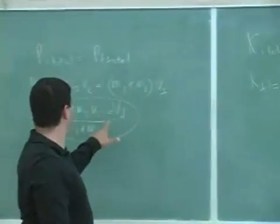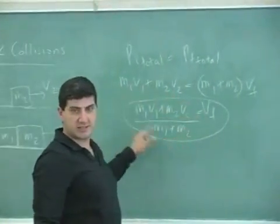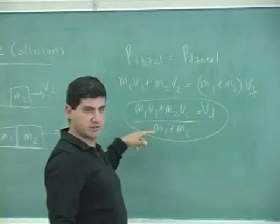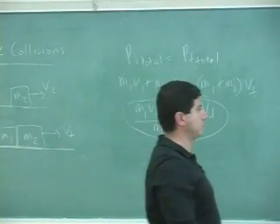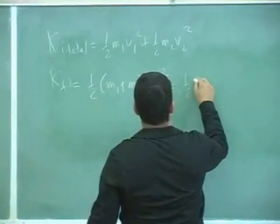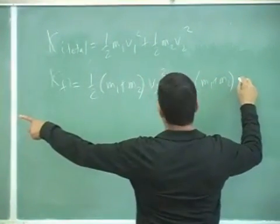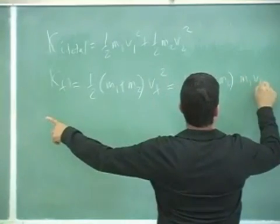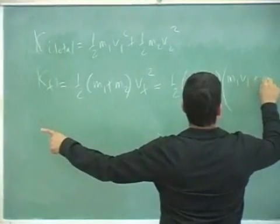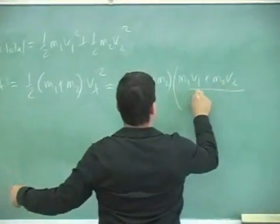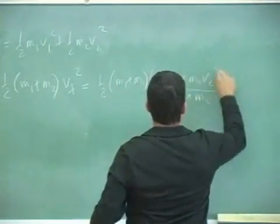And then V final is equal to this thing, the formula that we derived, squared. So square that thing, you get M1 V1 plus M2 V2 over M1 plus M2 quantity squared.